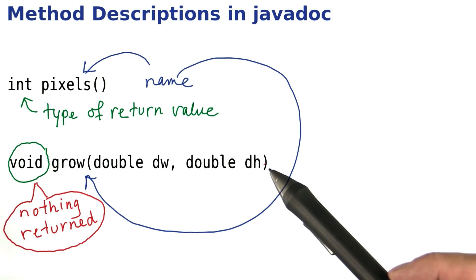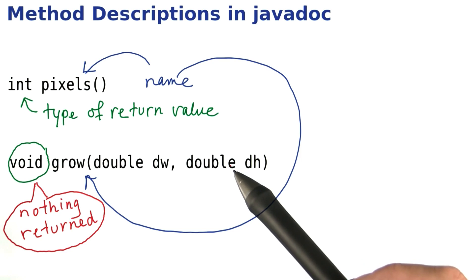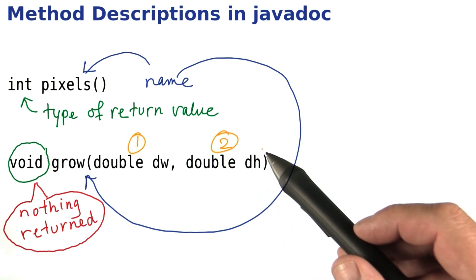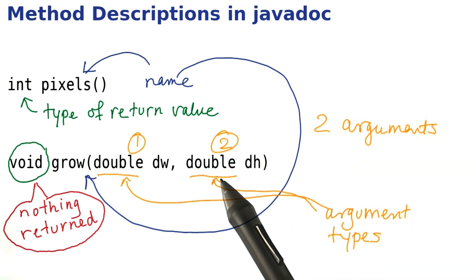Now, this method call has another feature. It describes what kind of arguments to pass. You call this method with two arguments, and here you find the types. You can grow by any decimal number. It doesn't have to be an integer.